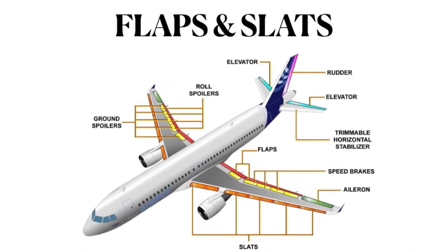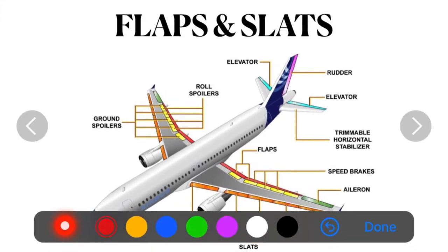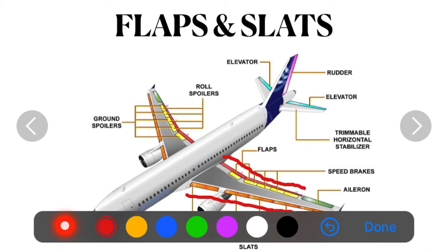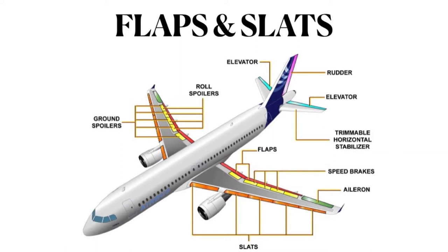Now let us look at flaps and slats — lift generating devices mounted on the trailing and leading edges of the wing. In a modern aircraft, the wing is built to fly very fast at high altitude with very little drag. But for takeoff and landing on fairly short runways, we need to extract a lot of lift at very low speed. A single wing cannot be both efficient at high speed and produce high lift at low speed.